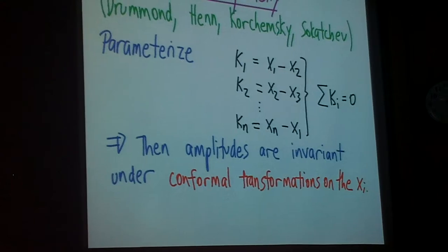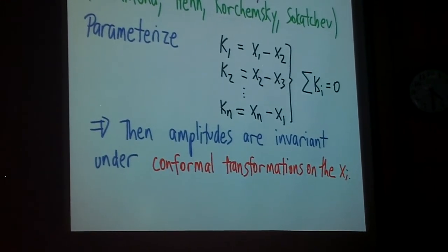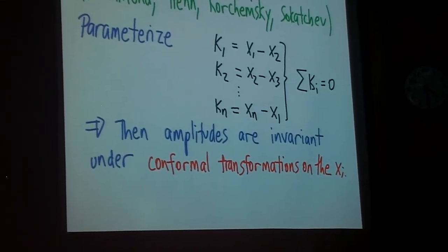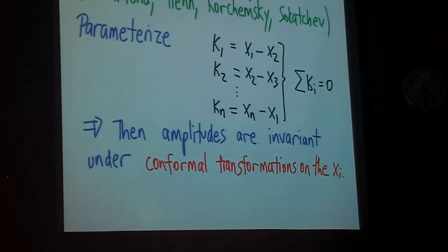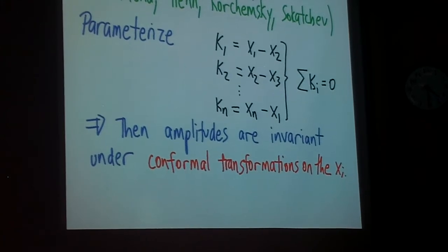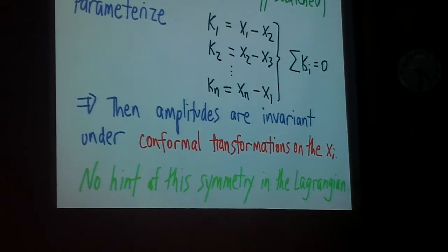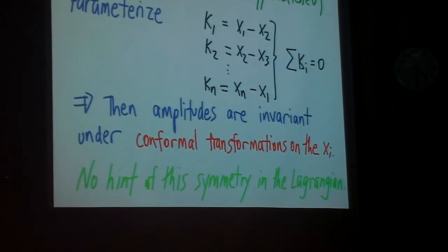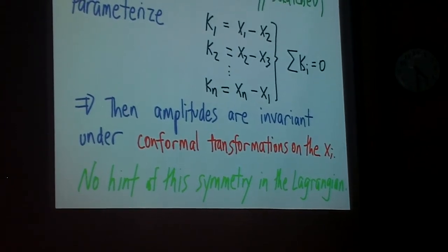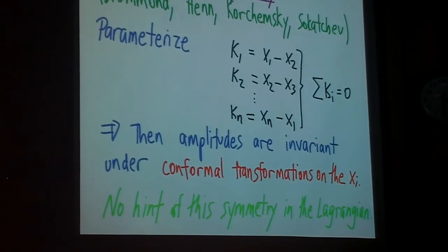Dual conformal symmetry is the statement, of course, you know that QCD amplitudes at tree level are already invariant under conformal transformations, ordinary conformal transformations. But the remarkable thing is that they are also invariant under conformal transformations on these Xs. And again, I emphasize that there's absolutely no hint of this symmetry in the Lagrangian of the theory. So there's a symmetry of QCD which has gone unnoticed for many, many decades. And it's one of the things that's responsible for the remarkable simplicity we see.